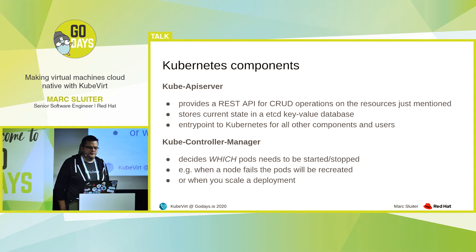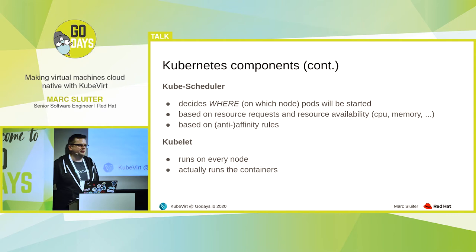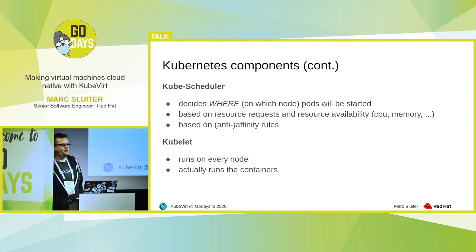Then the next component is the Kube controller manager. That one is deciding which pods need to be started or deleted based on, for example, scaling of deployments or when a node fails. And then we have the Kube scheduler, which decides where to run these pods. This decision is made based on resource requests you can define on your pods and on resource availabilities on nodes. For example, if you have a node with much memory left and you have a pod which needs much memory, the scheduler will decide this is the best node for you. You can also define affinity and anti-affinity rules to say you want to run pods on the same node or on different nodes.